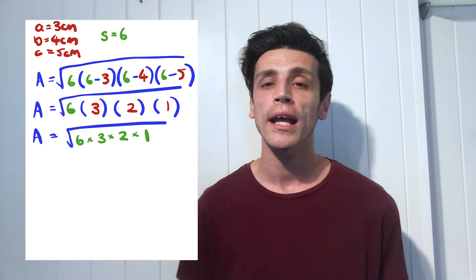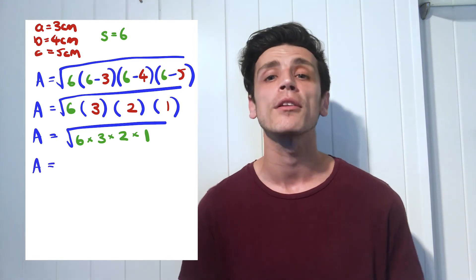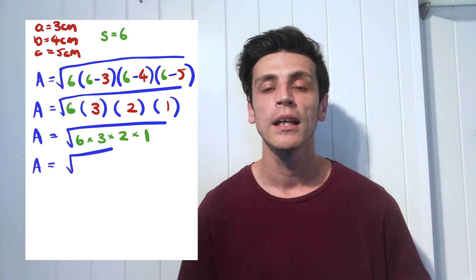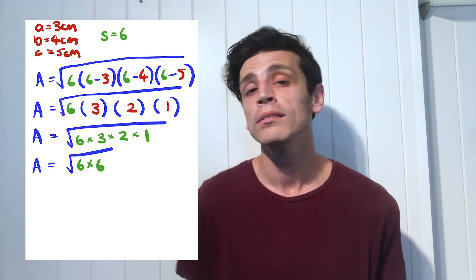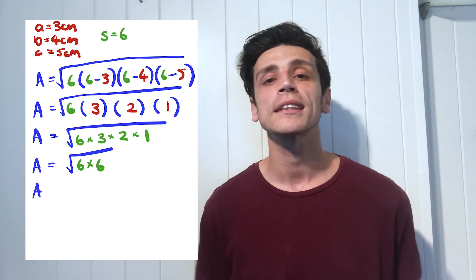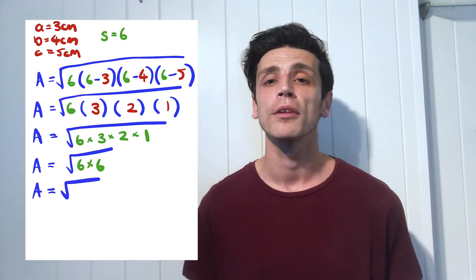And now we work out the multiplication. So three multiplied by two would give me six, and six multiplied by one would remain six. So now it's going to be the square root of six multiplied by six.